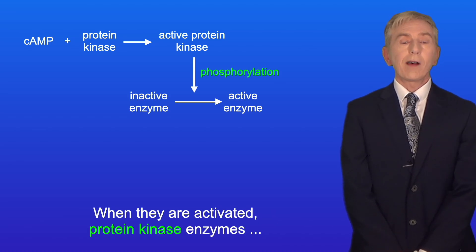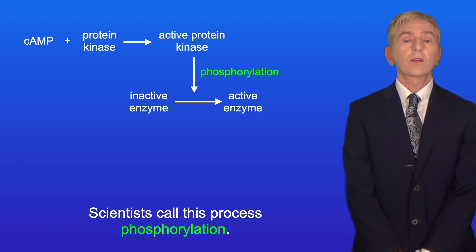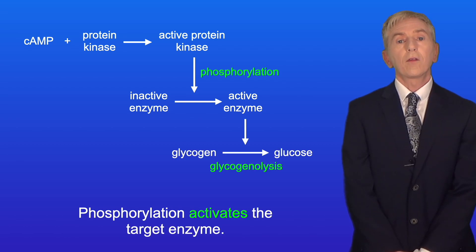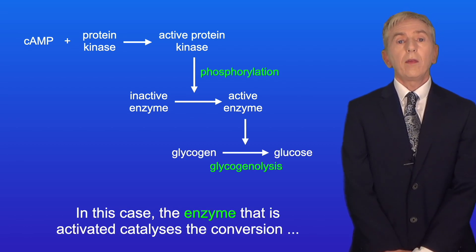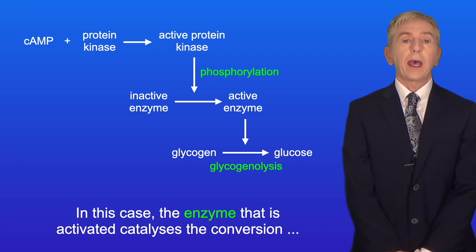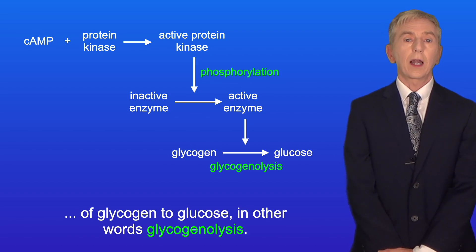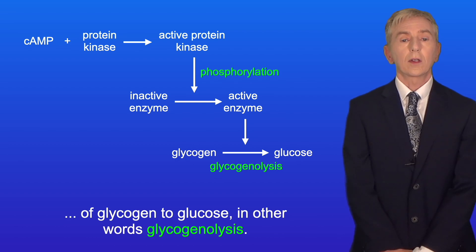When they're activated, protein kinase enzymes add a phosphate group onto other enzymes. Scientists call this process phosphorylation, and phosphorylation activates the target enzyme. In this case, the enzyme that is activated catalyzes the conversion of glycogen to glucose — in other words, glycogenolysis.